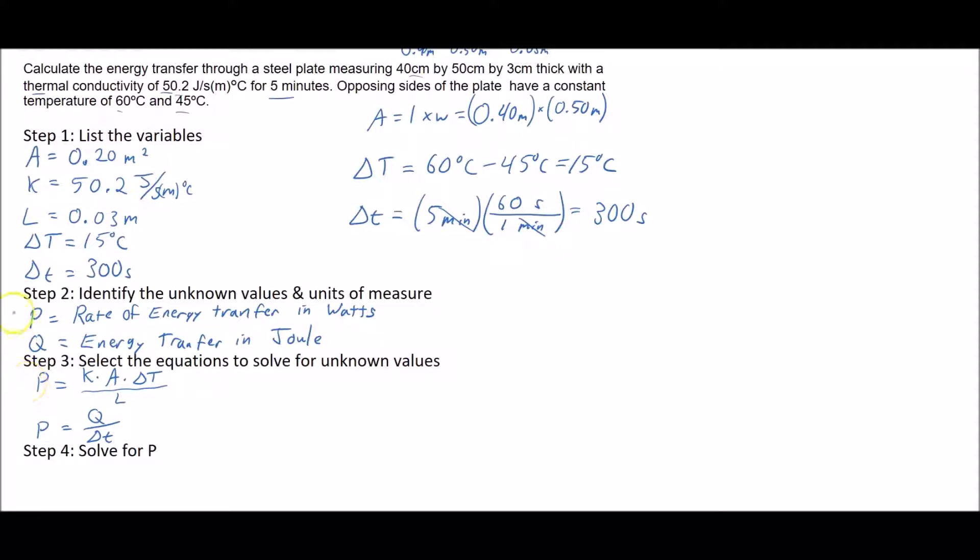We wanted to find capital P so we used the first equation because we're going to have all these variables already given to us. Then to find capital Q, the only one that really makes sense is this equation because it has the capital Q in it. We'll know the delta t and we'll know the P from our previous equation.